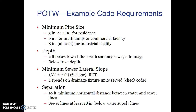The minimum sewer lateral slope — the lateral is the pipe that runs from the house to the main septic line — has to be at a slope of one-eighth of an inch per foot, which is a 1% slope. That slope depends on the drainage fixture units served. There also has to be a 10-foot minimum horizontal distance between water and sewer lines, and sewer lines have to be at least 18 inches below the water supply lines.